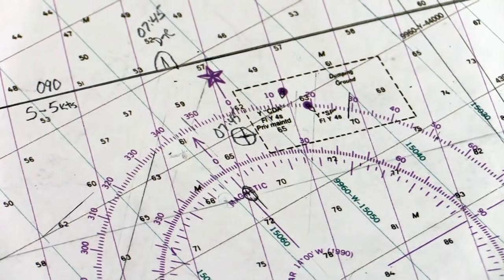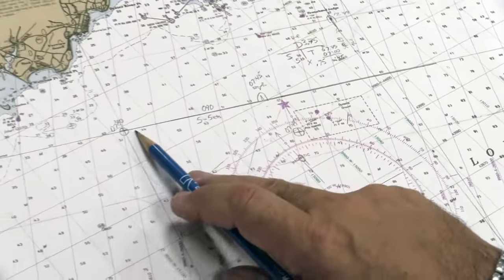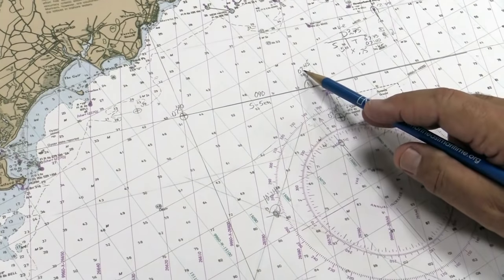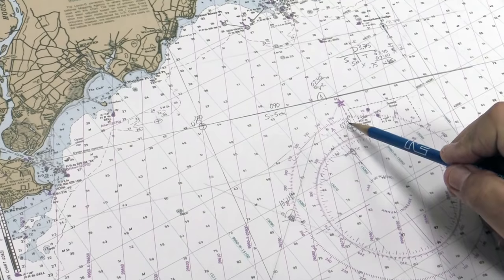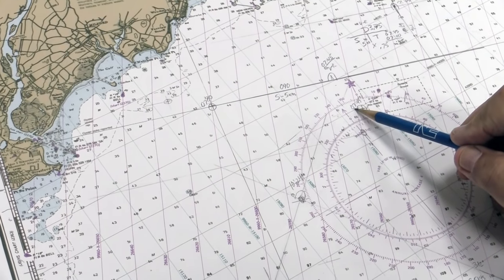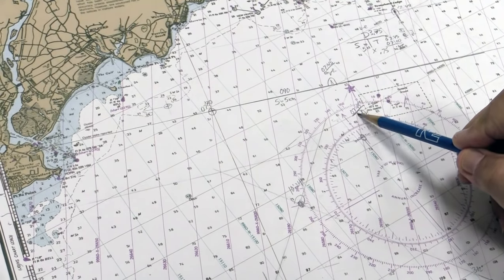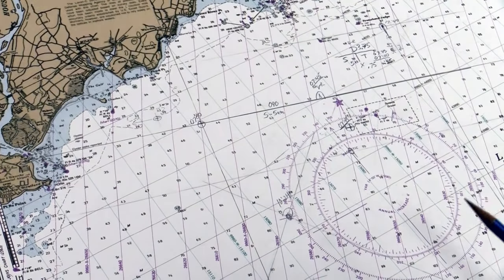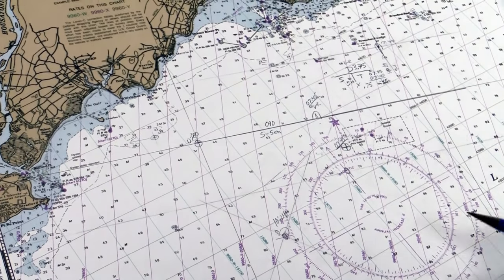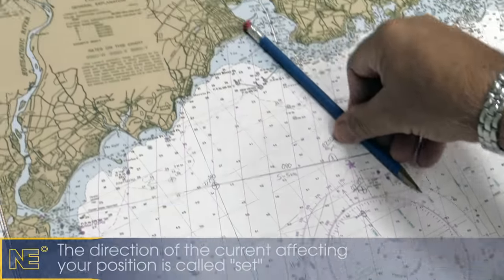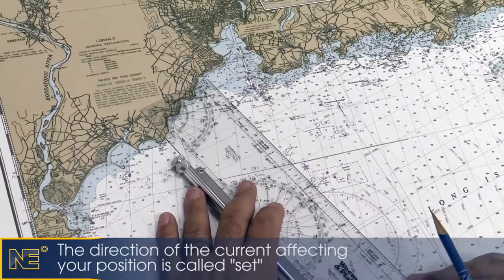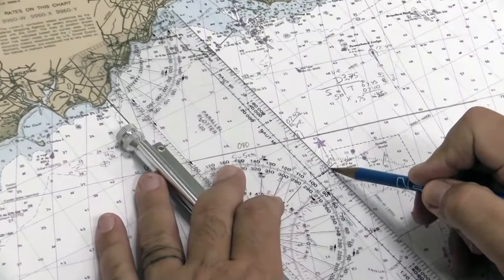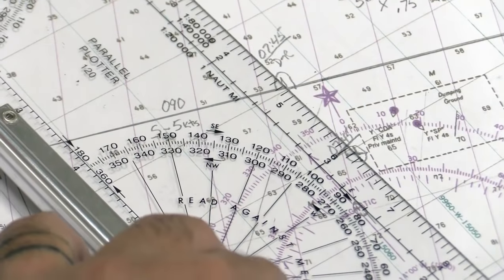So now what's happened? We've traveled along this course, assumedly, and we anticipated, we reckoned that we would be at this position at 0745. In reality, we found ourselves to be at this position at 0745. So what's happened is the current has forced us off course in that direction. So we make a line from our DR to our new position. That's our set line, the direction the current has set us.